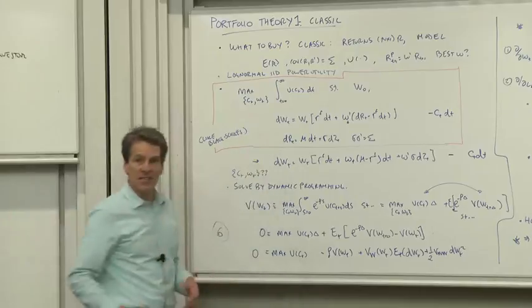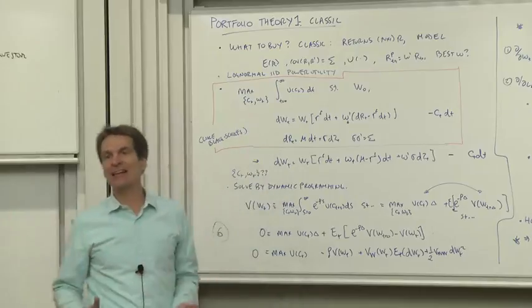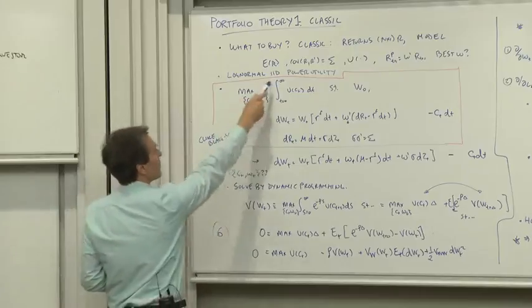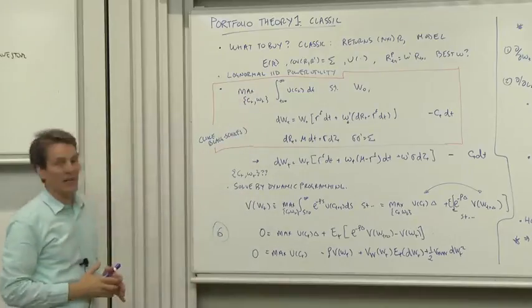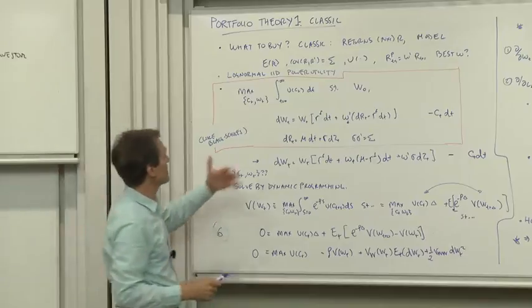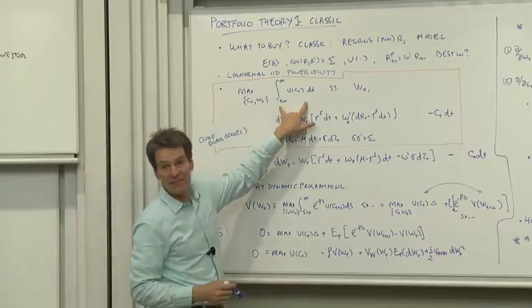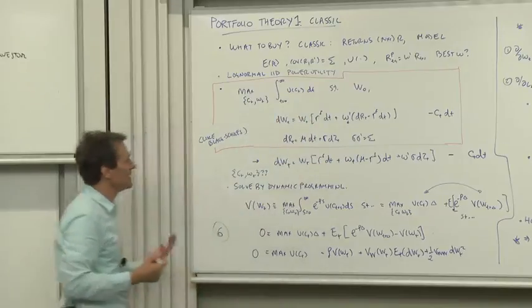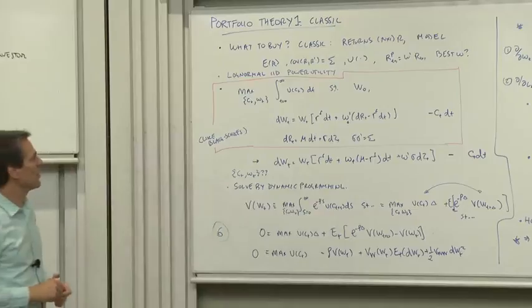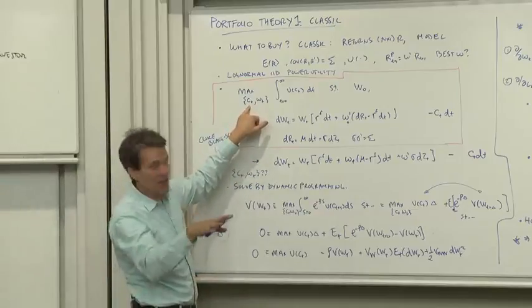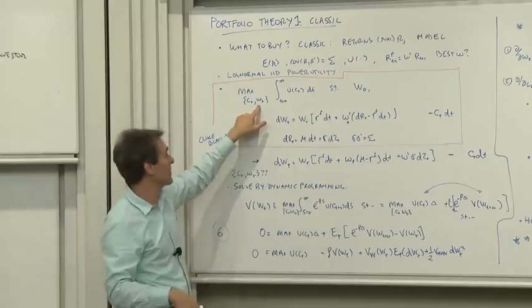Let's do that first in a concrete, simple, classic example where you can see how the computations get done. The log normal IID power utility investor. So here's the setup. The investor's objective is lifetime utility of consumption. We're going to do a real problem that at least is reasonable in that regard.